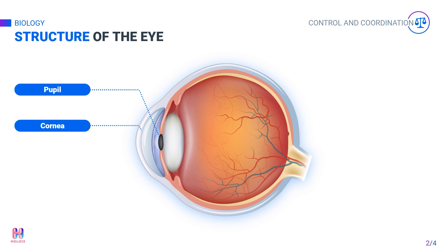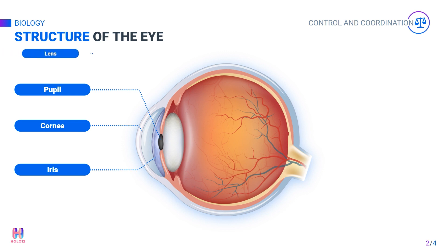The size of the pupil can be changed with the help of another part: the iris. The iris controls the diameter of the pupil and regulates the amount of light that can enter. After entering the pupil, the light reaches the lens.